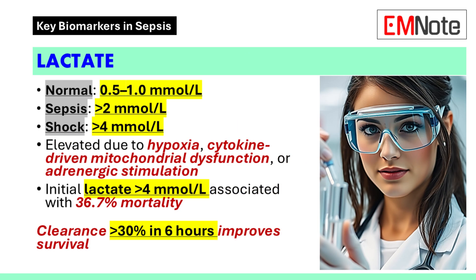Lactate is a metabolic byproduct that reflects tissue oxygenation and mitochondrial function. The normal arterial range for lactate is 0.5 to 1.0 millimoles per liter. In sepsis-related hyperlactatemia, levels exceed 2 millimoles per liter, and in septic shock, levels often exceed 4 millimoles per liter.